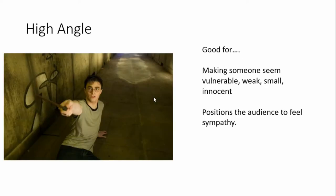By contrast, you can have a high angle, where your camera is up high looking down at somebody. That high angle shot generally makes a person seem smaller, more vulnerable, weak, and innocent. So if you want someone to look injured or scared, you might put your camera up high looking down on them — it often encourages the audience to feel sympathy for that person or character.